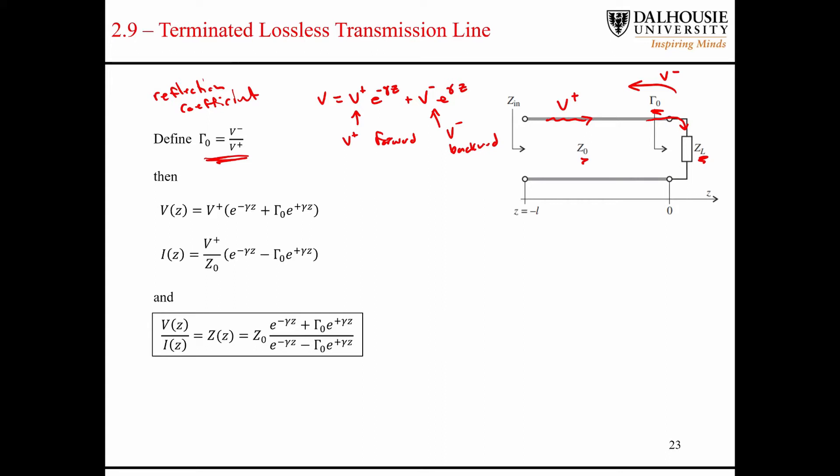The ratio between the two is the reflection coefficient. We can rewrite the solutions to the voltage and current wave equations by including the term here for the reflection coefficient. And when we divide the first equation by the second here, we end up with an expression for impedance.